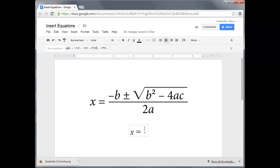Right now, the cursor is in the numerator. So we begin typing the opposite of b. And next, we need a plus or minus symbol. So we go to the operators menu and we find plus or minus.